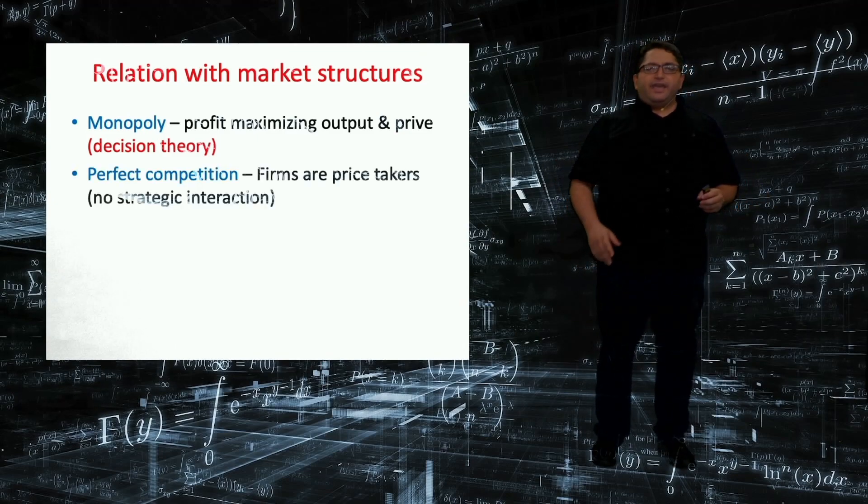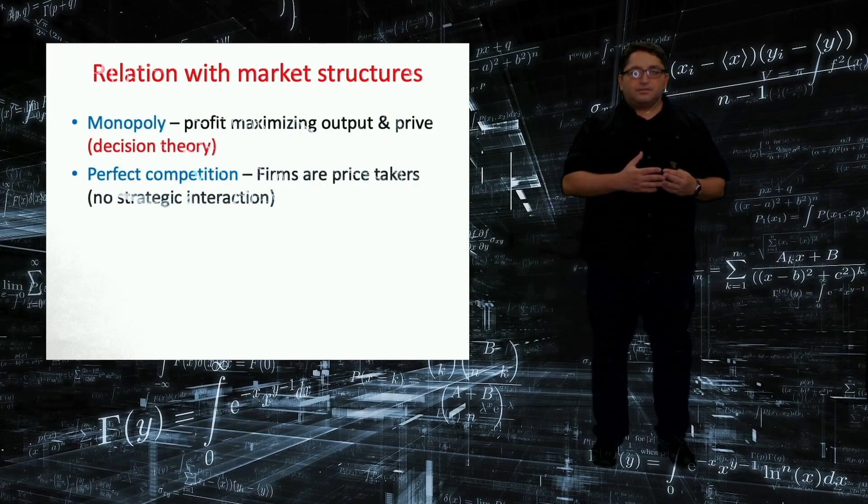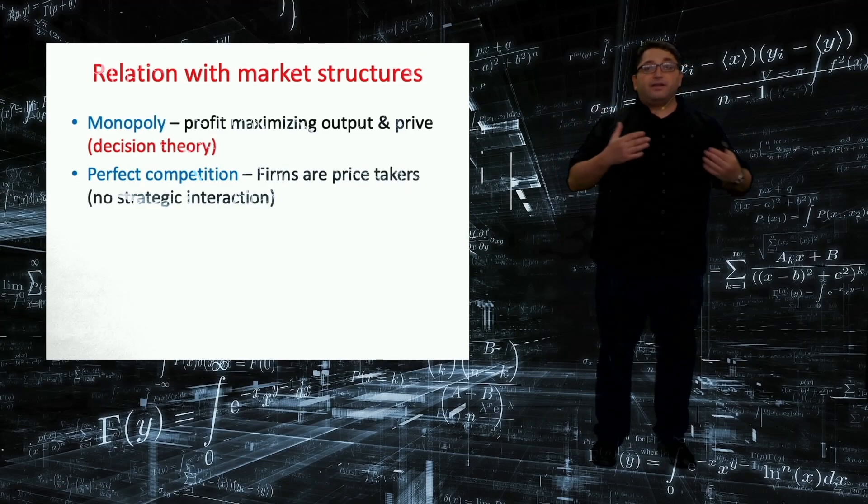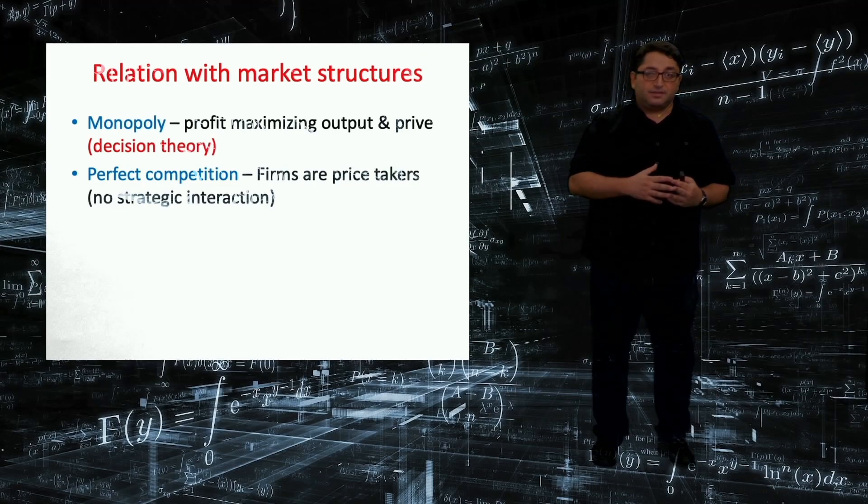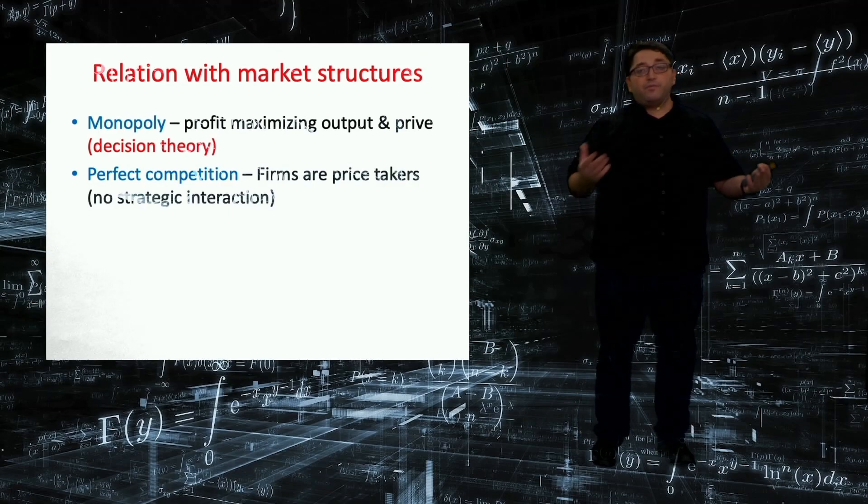And let's look at the perfect competition. Here, there are many buyers and sellers trading an identical good, and the price of the good is determined by the aggregate demand and supply. And until it is determined, not any individual buyer or seller can influence the price. They decide on how much to buy and sell at that particular price. So everybody is a price-taker. So there is no interplay, there is no interaction. So these two extremes do not constitute game theory. However, everything in between, which is pretty much everything, can be analyzed by game theory.